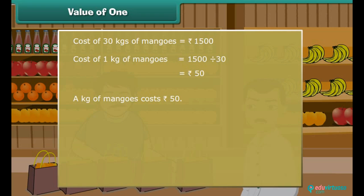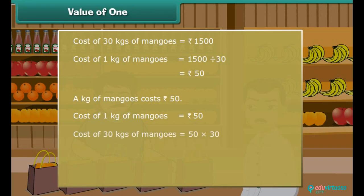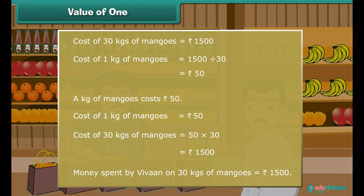Let us verify our division. Cost of 1 kg of mangoes is 50 rupees. Cost of 30 kgs of mangoes is 50 × 30, which is equal to 1,500 rupees. As per the question, Vivan spends 1,500 rupees on 30 kgs of mangoes. So, we verify that our division operation is correct.